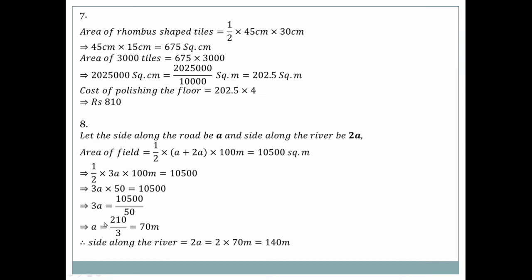Since a = 70 meters, the other parallel side = 2 × 70 = 140 meters. This completes question number eight.